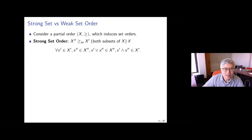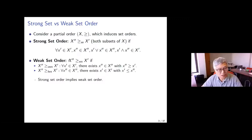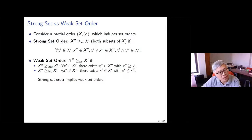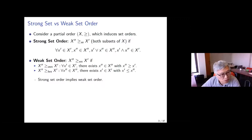The weak set order is implied by the strong set order. We say X'' is bigger than X' in the upper weak set order if for any element in X' there exists an element in X'' that is weakly greater. Likewise, for any element in X'' there is an element in X' weakly smaller — that is the lower weak set order. Together these give the weak set order.